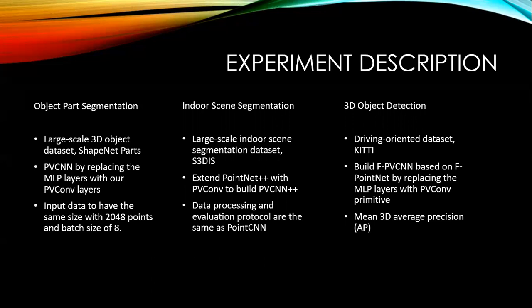In this paper, the author experimented on multiple 3D tasks including object part segmentation. They experimented on the large-scale 3D dataset ShapeNet Parts. They build the PV-CNN by replacing the MLP layer in PointNet with PV-CNN. It ensures that input data has the same size with 1024 points and batch size of 8.